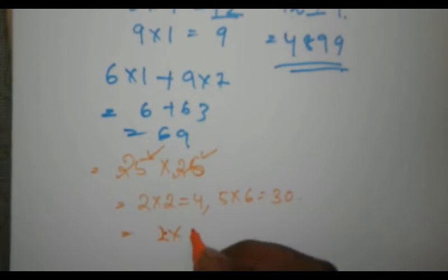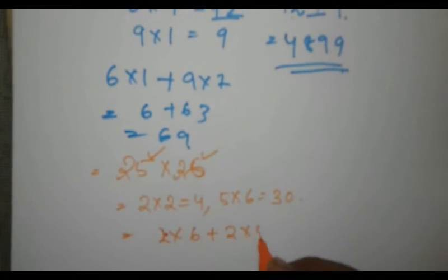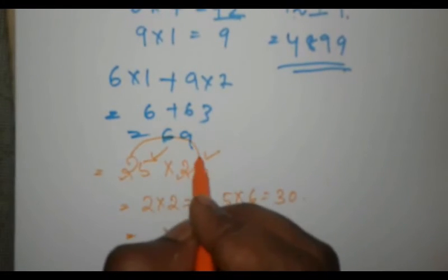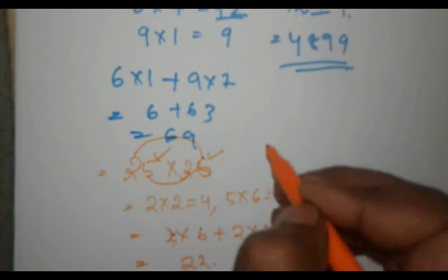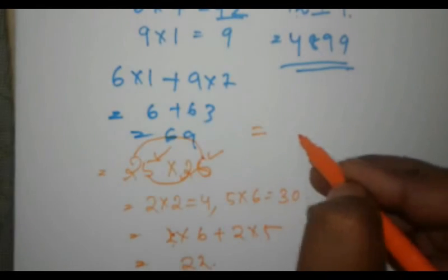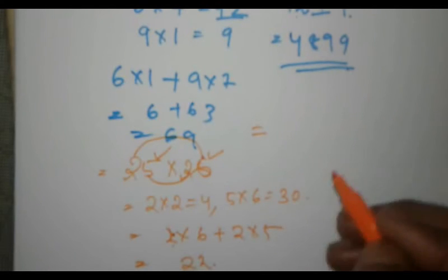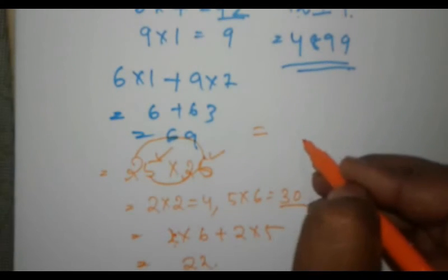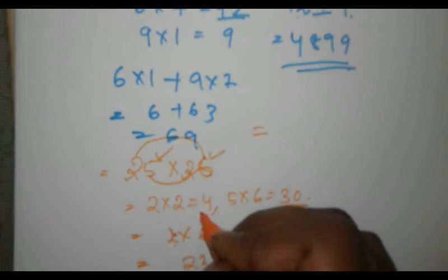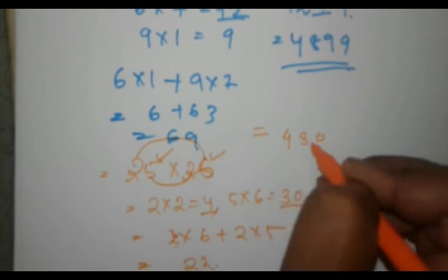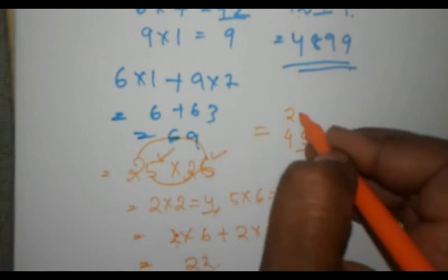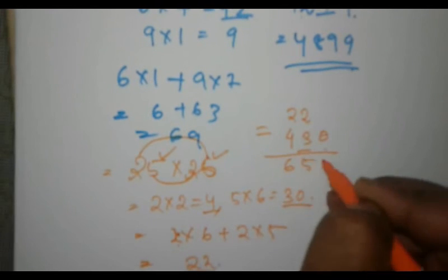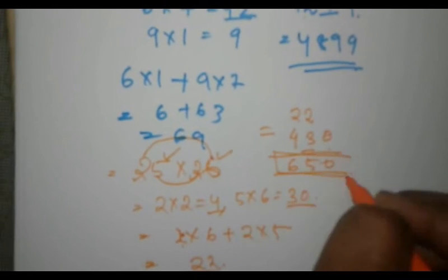Next, we calculate 2 into 6 plus 2 into 5, which gives us 22. We now have 4, 22, and 30. Combining everything, the answer is 650.